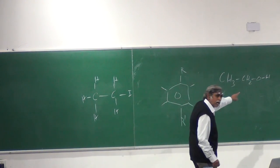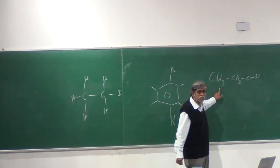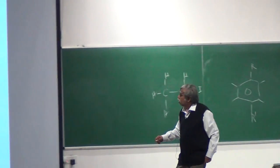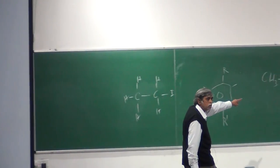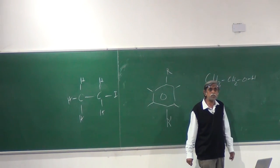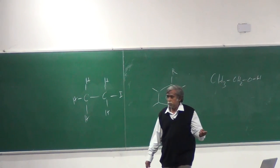In other words, if that has a role to play, I am not going to get a simple quartet. I am going to get something more complicated than that. And what will happen to my OH? If the OH can split this guy, then this fellow will also split the OH. And how much should the OH be split into? Into a triplet.